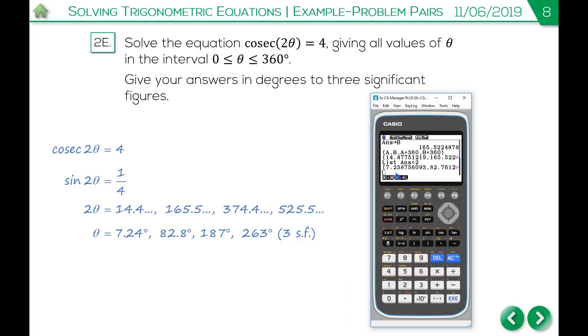So just to recap of what we've just done, find the first two solutions, store them as A and B, pop them into a list. If you need more solutions, you can add multiples of 360 or whatever you need to add on. Press equals and then do whatever you need to do to the whole list in one go. So in this case, I've divided it by two.